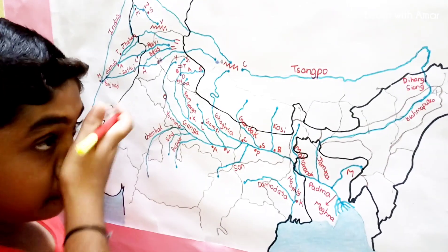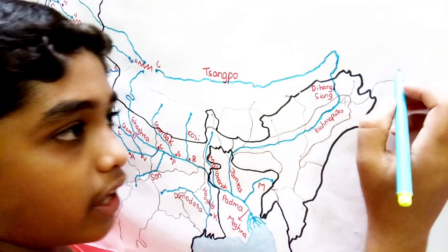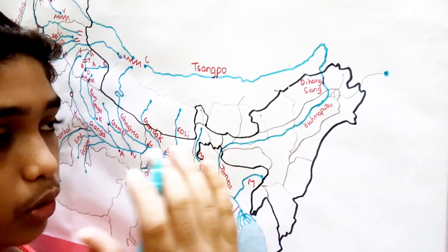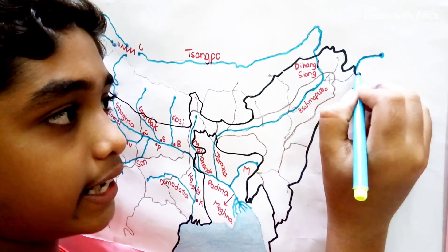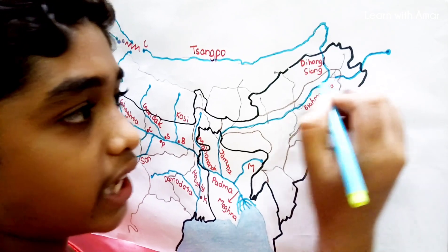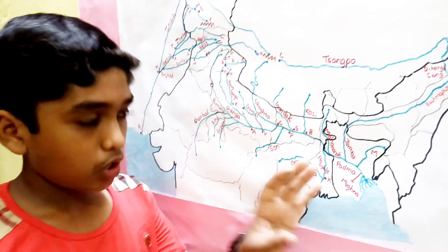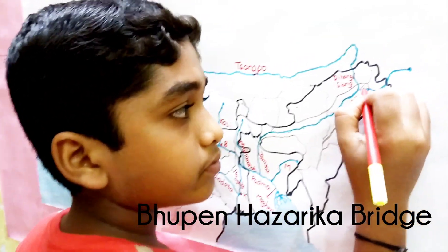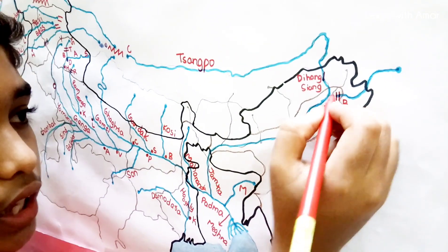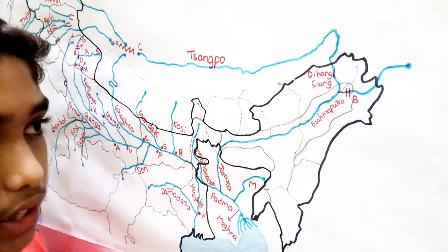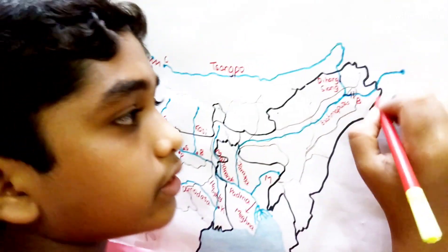Now let's look at the tributaries of Brahmaputra, starting with the Left Bank tributaries. The first Left Bank tributary originates in Eastern Tibet, flows through Tibet, and enters India in Arunachal Pradesh. Here we find the Bhupen Hazarika Bridge, which is the longest bridge in India. This tributary is Lohit, and it joins with the Brahmaputra here.